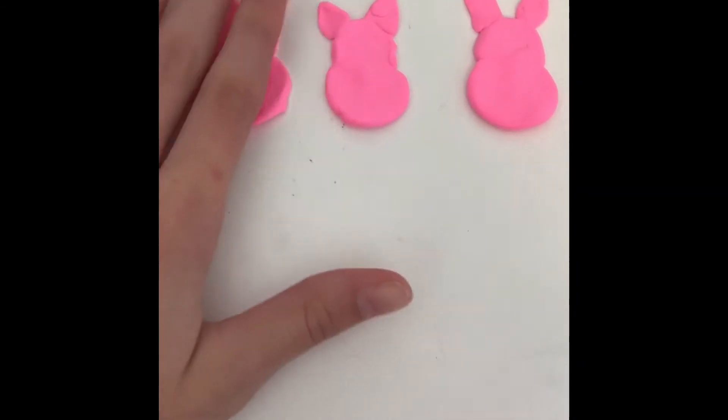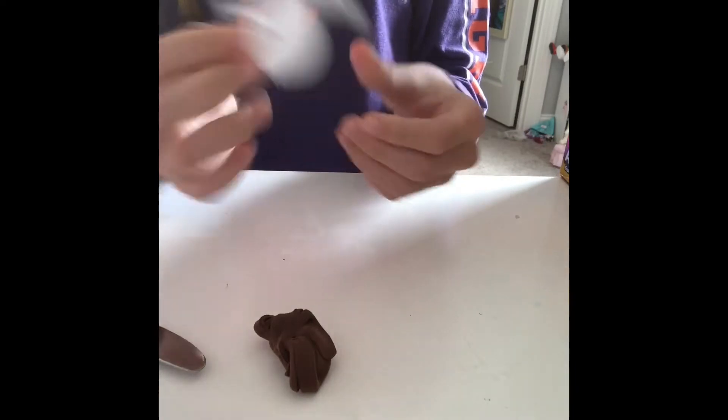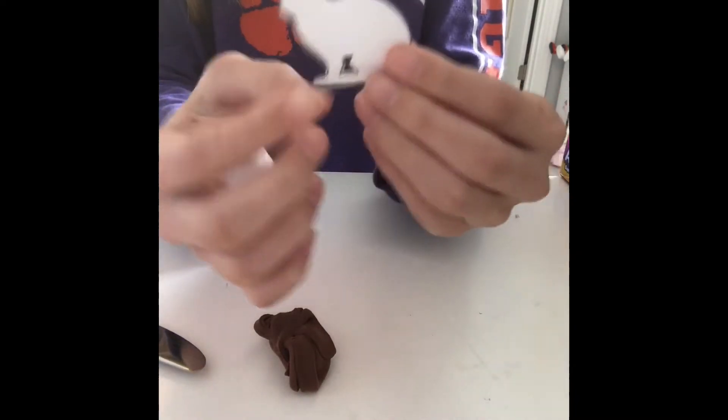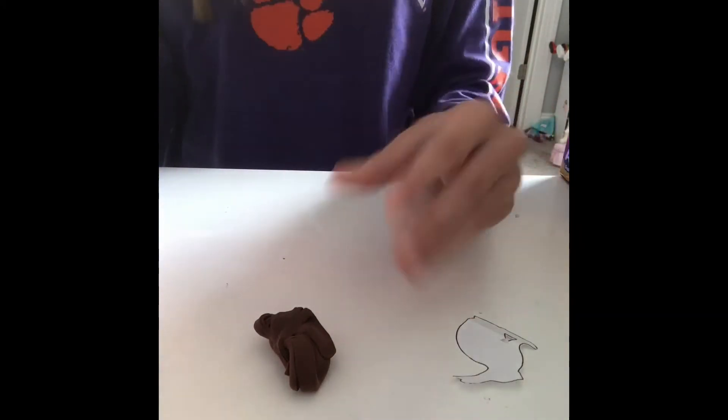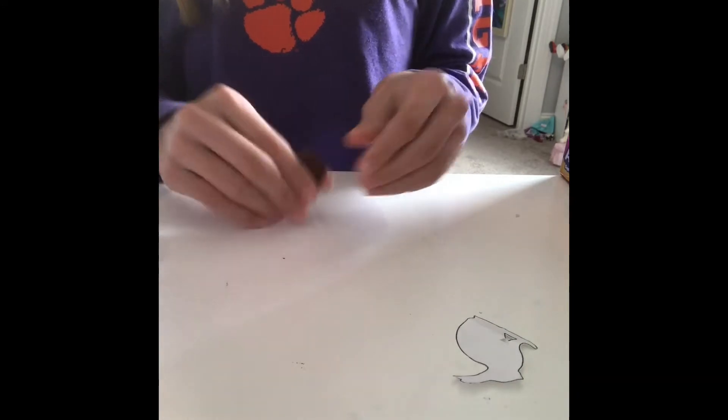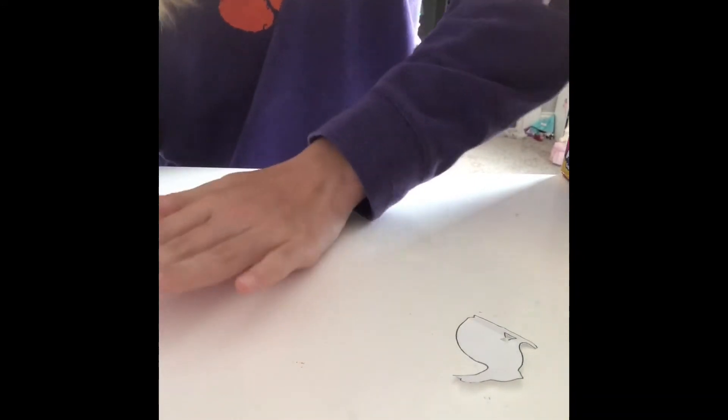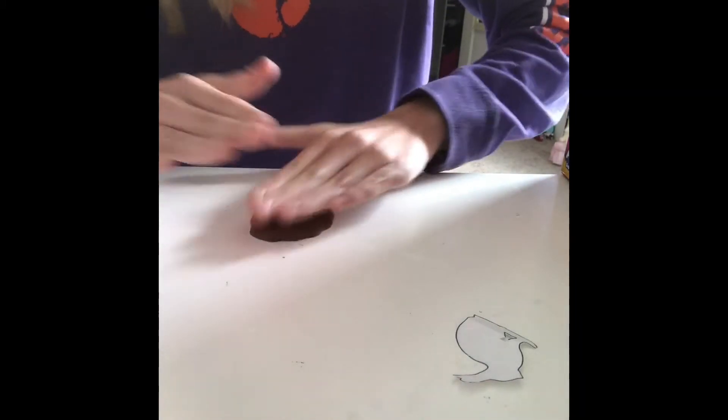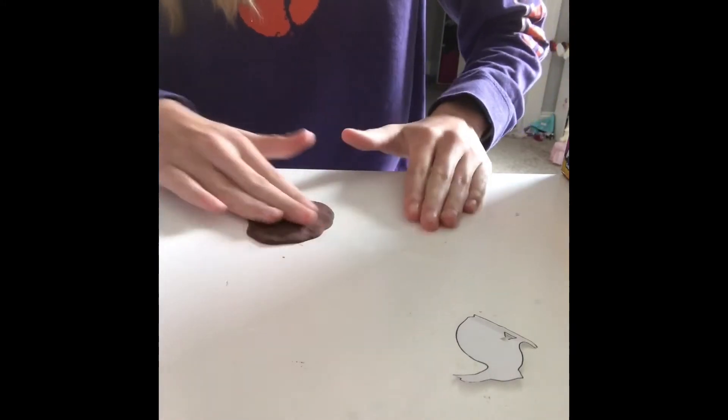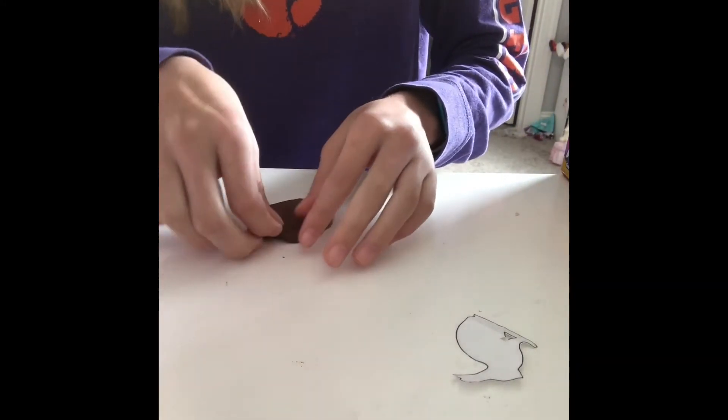Mine's air dry clay, but if yours is polymer clay then you need to bake it. To make a chocolate bunny you're going to need clay again and an outline of a bunny. I messed up on the cutting there but I'm not going to actually cut that piece out. You also need a knife.